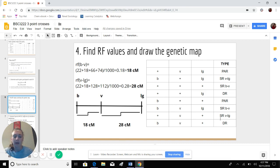And we do the same thing with V and LG. We have V and LG values. So we include the two double recombinants, 22 plus 18, plus 128, plus 112, divided by 1,000 and get 0.28, which is converted to 28 centimorgans. So then when we draw our genetic map, we have V in the middle. And B is going to be closer to V than V is to LG. And then we label B and V is 18, V and LG is 28. And then there's our genetic map.